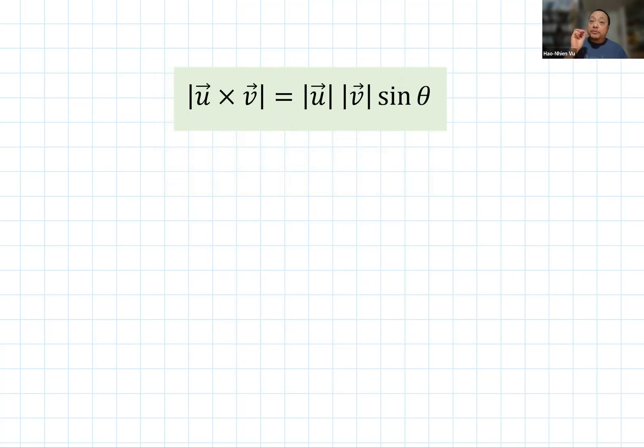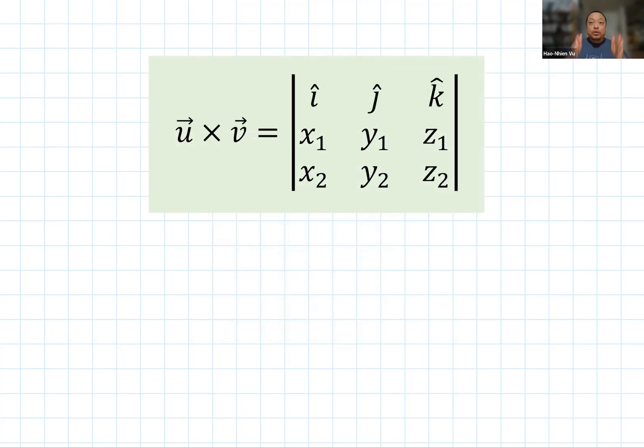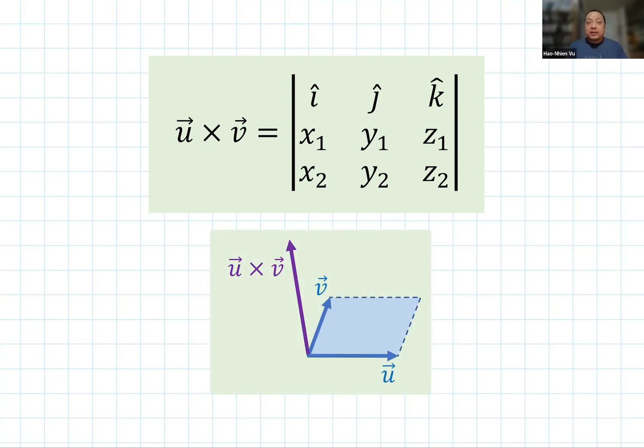Now if you define the cross product of u cross v as u v sin theta then it's obvious that's equal to the area of the parallelogram. But if you define the cross product as a determinant then it's not obvious why that determinant on the one hand and the area on the other hand should be equal. So that's what this video is about.